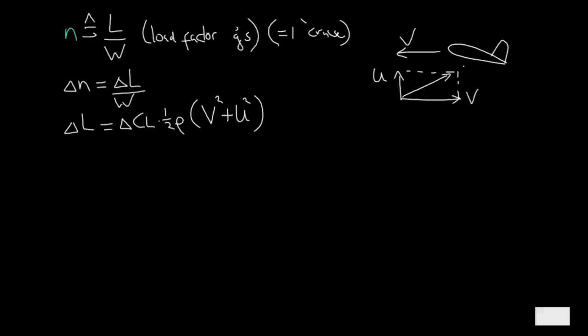Which means that the change in angle of attack can be represented with this small diagram. Total velocity is the square root of U squared plus V squared, and this would be the change in angle of attack.